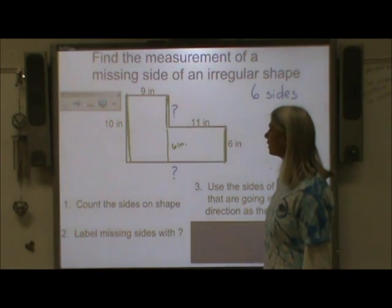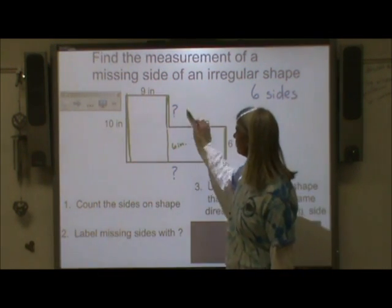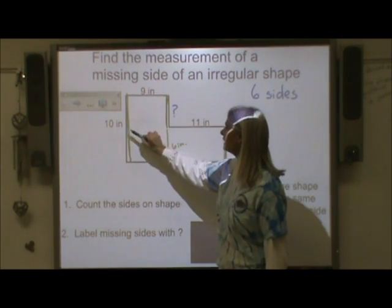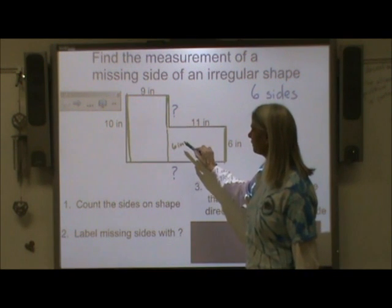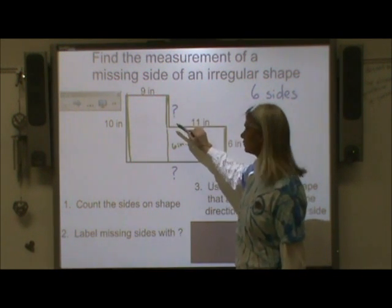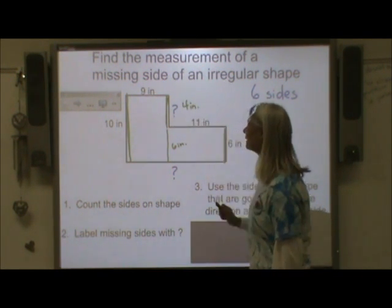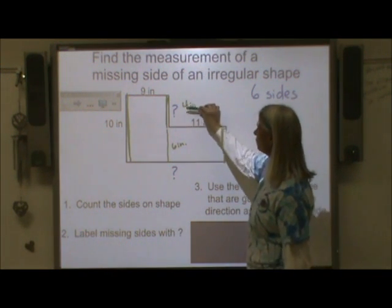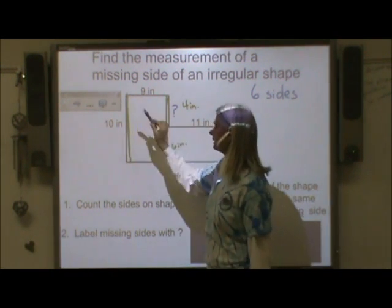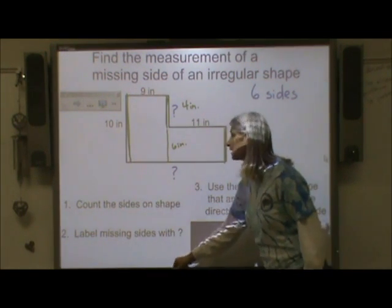So what operation do I need to perform? Well, if I take ten and take six away from it, it should tell me what this side is — so that would be four inches. To check myself, I would ask: is four and six ten? Yes, it is. So that is the correct answer for that missing side.